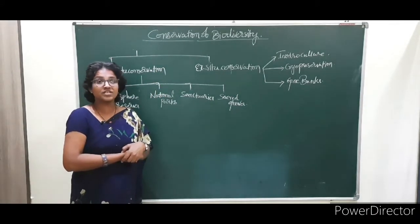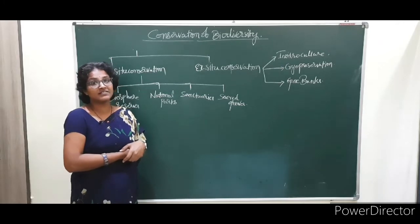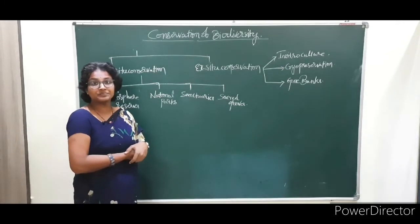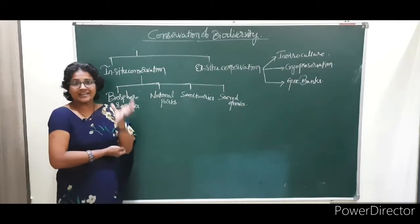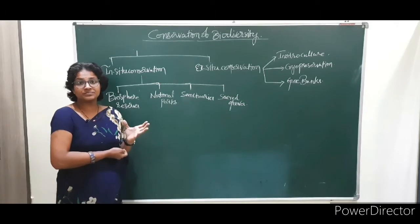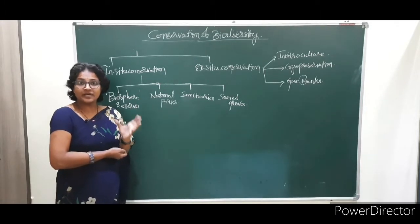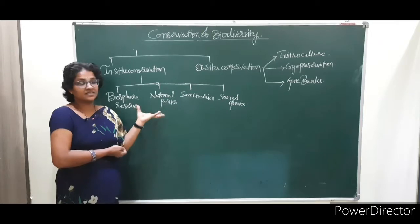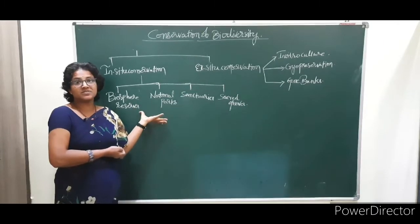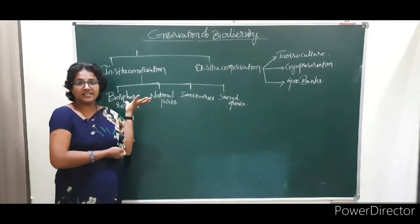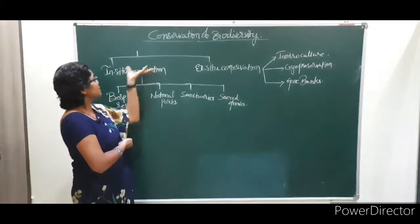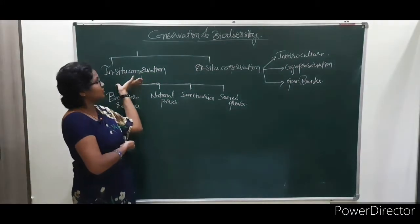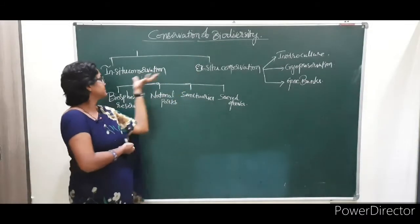So conservation of biodiversity was introduced. The Wildlife Act was introduced in 1972 to protect animals. According to that act, we have to conserve and protect animals, and different systems were introduced — in-situ conservation and ex-situ conservation.